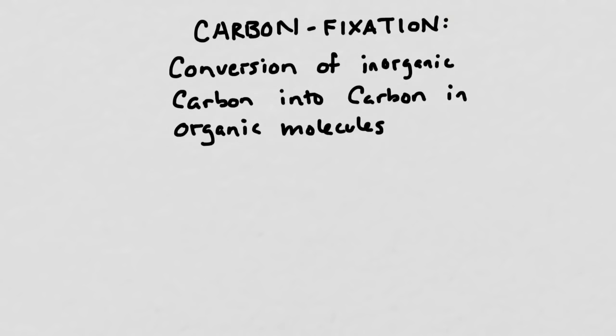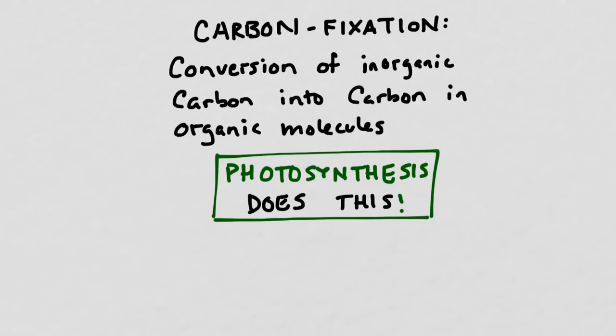So a common term that you hear a lot when you're talking about photosynthesis is this idea of carbon fixation. And all that really means is that you take carbon from the atmosphere and you transform it into part of an organic molecule. In our case, we're transforming carbon dioxide into glucose. And this is basically what the process of photosynthesis does.